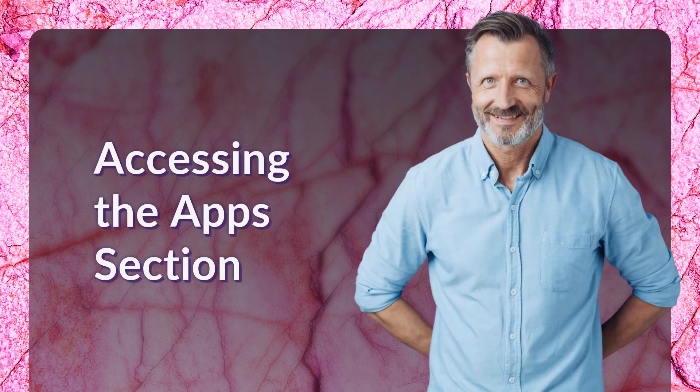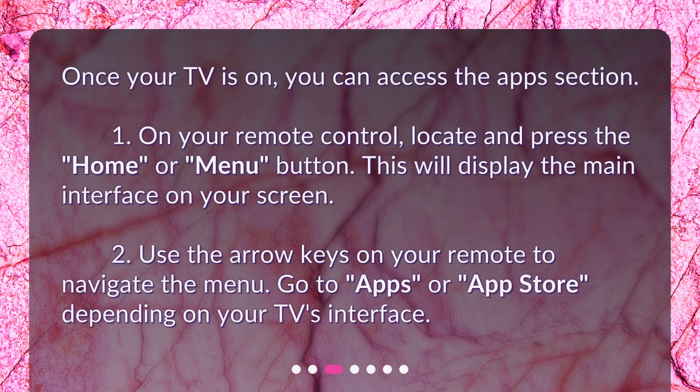Accessing the apps section. Once your TV is on, you can access the apps section. 1. On your remote control, locate and press the Home or Menu button. This will display the main interface on your screen. 2. Use the arrow keys on your remote to navigate the menu. Go to Apps or App Store, depending on your TV's interface.